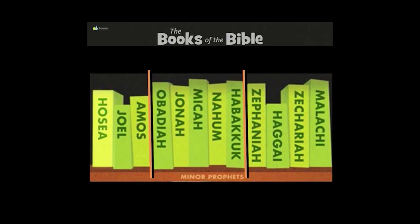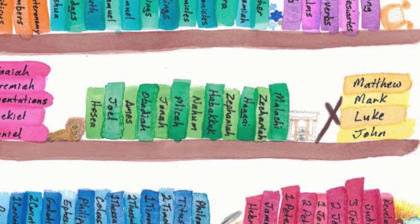Attention. Present Bibles. Micah. Start. Jonah, Micah, Nahum. Hosea, Joel, Amos, Obadiah, Jonah, Micah, Nahum, Habakkuk, Zephaniah, Haggai, Zechariah, Malachi. These are the books of the Minor Prophets.